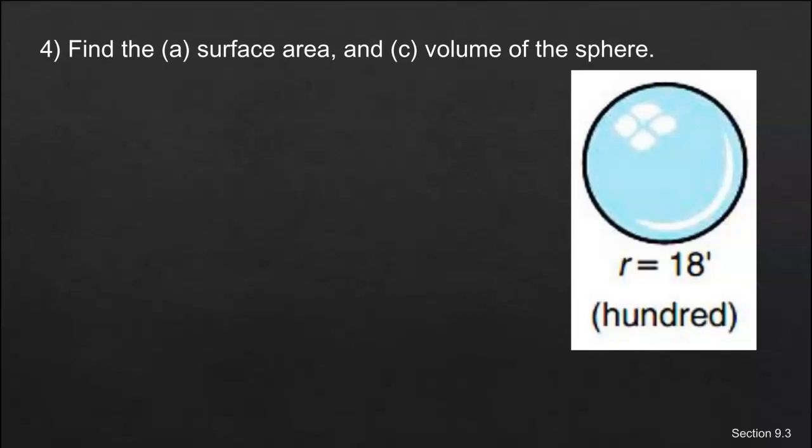On this one, it says to find the surface area and the volume, A and C. I think I probably meant that to be A and B, but that's okay. I'm going to change that to a B. So we're going to find surface area and volume. For surface area, since they gave us radius, the radius is going to be somewhere in here to a point on the outside, we're going to just use these formulas.